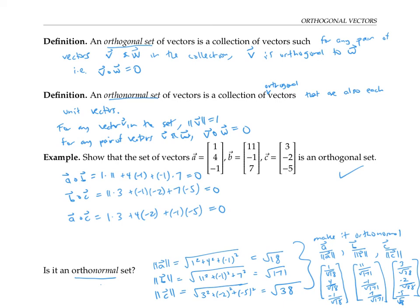Another way of seeing the same idea is that since A dot B was zero, when we take A over its length dotted with B over its length, that's the same thing as one over the length of A times one over the length of B times A dot B. And since A dot B was zero, multiplying it by a couple of scalars still gets us zero. So these two vectors once rescaled are still orthogonal.